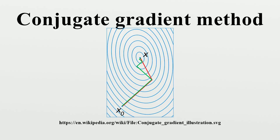This also allows us to approximately solve systems where n is so large that the direct method would take too much time. We denote the initial guess for x by x_0. We can assume without loss of generality that x_0 equals 0.